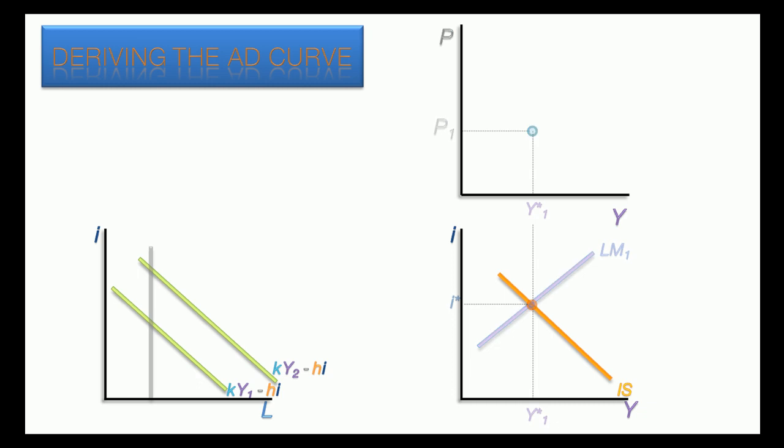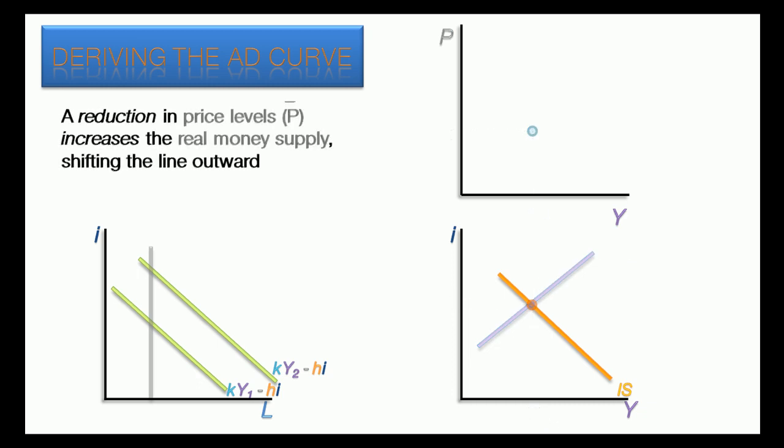A reduction in the price level increases the real money supply because people can buy more with the money they have. The lower price level shifts the money supply line outward. This causes the LM curve to shift down and the equilibrium income, Y2, to be further to the right. Where the line intersects with P2, the second point in the aggregate demand curve is drawn.